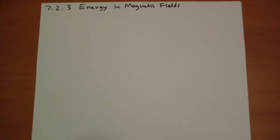Hi, this is Jonathan Gardner. We're covering section 7.2.3 of Griffith's Introduction to Electrodynamics. This is continuing our examination of Faraday's Law.